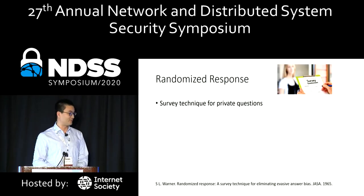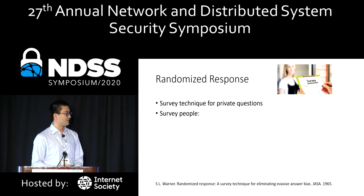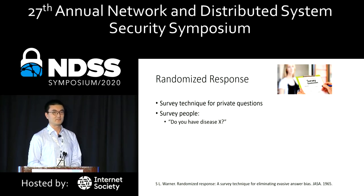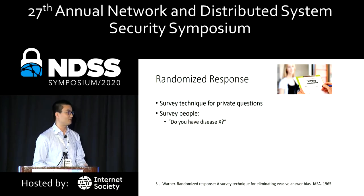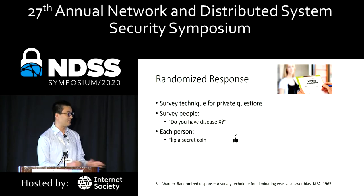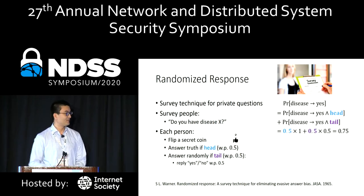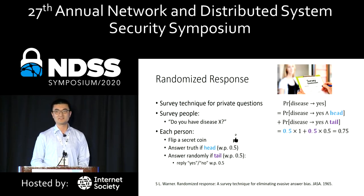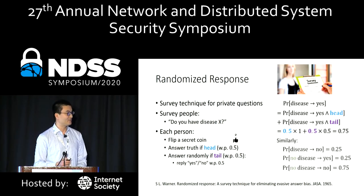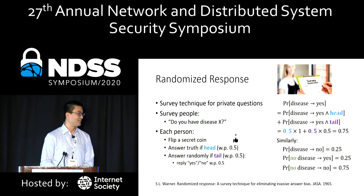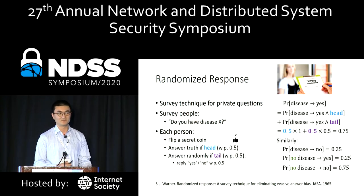So what is randomized response? It was invented more than five decades ago and is used for conducting surveys. Here is an example: a survey may ask a very sensitive question like, do you have some disease? In this case, each person flips a secret coin. If the coin comes up heads, the person answers truthfully; if it comes up tails, they answer randomly. By calculating the probabilities, we can see that if a person has the disease, they will answer yes with 75% probability and no with 25% probability. If a person is healthy, the probabilities are reversed.